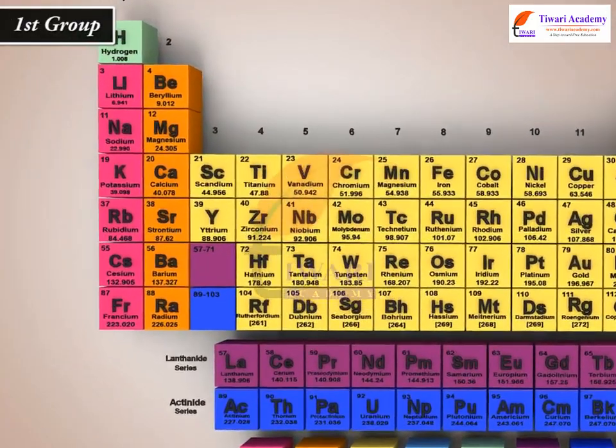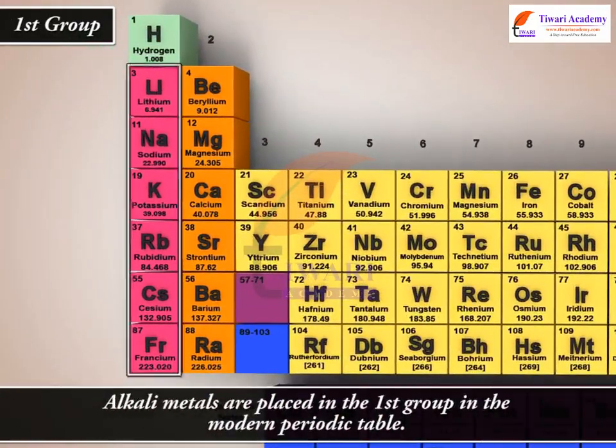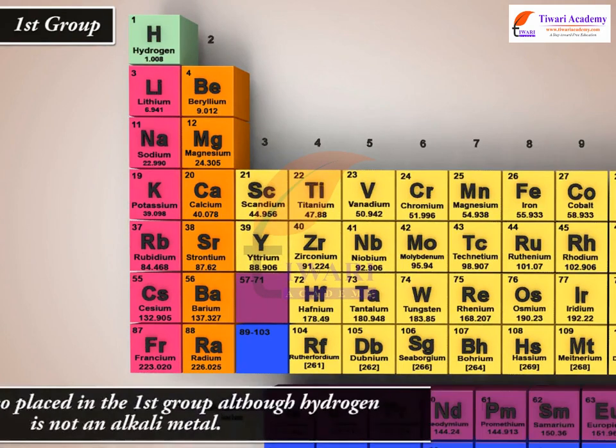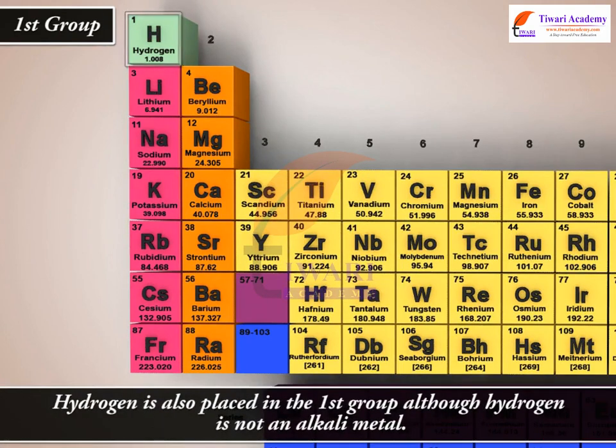Alkali metals are placed in the first group in the Modern Periodic Table. Hydrogen is also placed in the first group, although hydrogen is not an alkali metal.